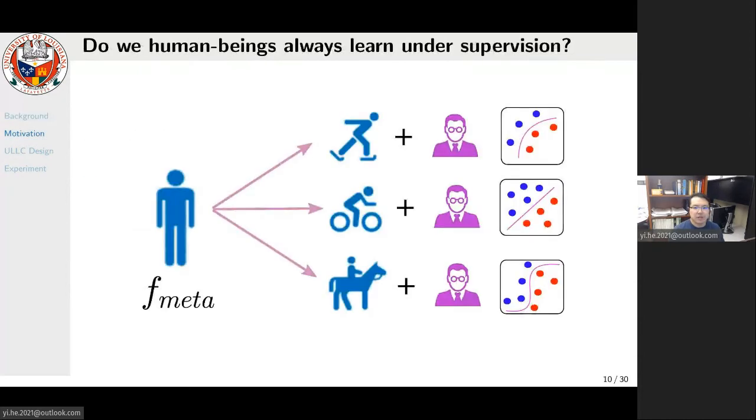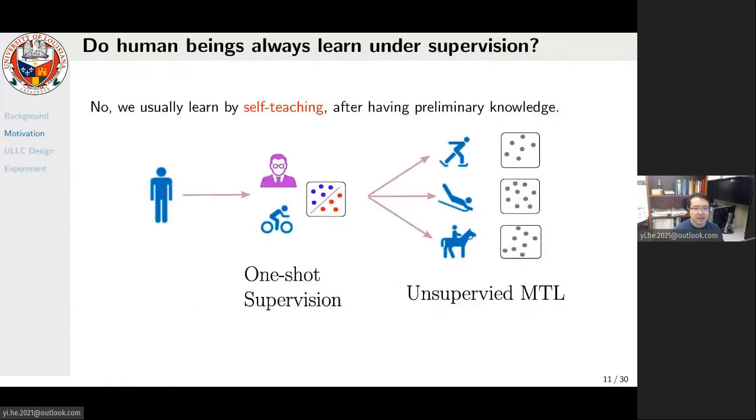What is the motivation? To explore this question, we draw insight from human learning activities again. First, we need to solve the label problem. We ask: do we humans always need a teacher to tell us what is the ground truth during our learning activities? Actually, no. It is usually the case that we first learn from a teacher in a one-shot fashion to get some preliminary knowledge. Then we are able to learn other tasks in a self-teaching manner.